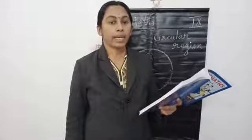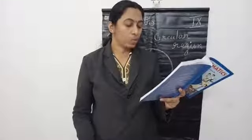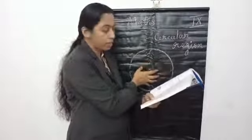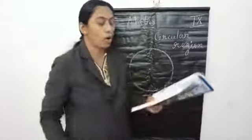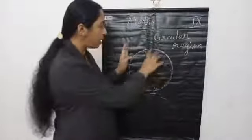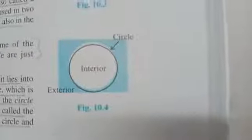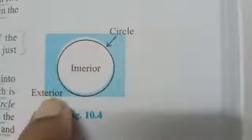Take your textbook, page 169, second last paragraph. A circle divides the plane on which it lies into three parts. They are: inside the circle which is called the interior of the circle, the circle itself, and outside the circle which is called the exterior of the circle. In your textbook figure 10.4: this is the interior portion, this is the circle, and the blue color portion is the exterior.